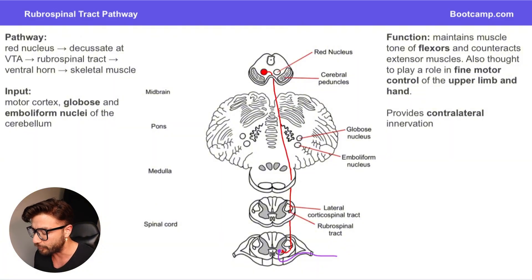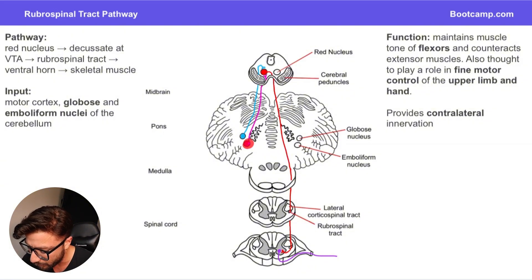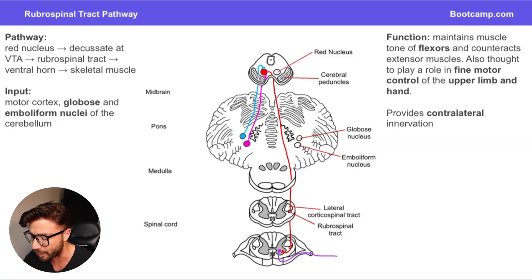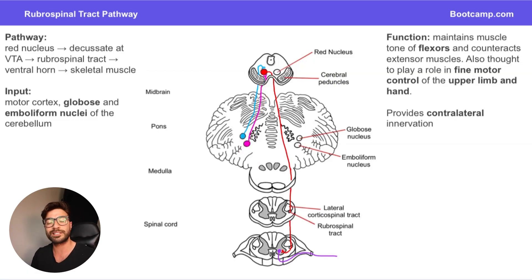It's not that straightforward — we also have some external input from the globose nucleus and the emboliform nucleus, which provide input to the red nucleus to help modulate it. Both the emboliform and globose nuclei provide modulatory stimulation to the red nucleus to make sure it's not providing too much stimulatory output. This is sensed through proprioceptive information coming in through the spinal cord, entering into the cerebellum, stimulating these nuclei, which then stimulate the red nucleus.